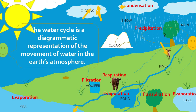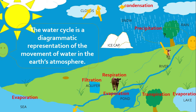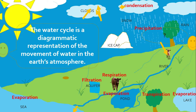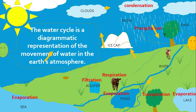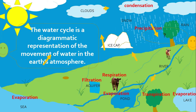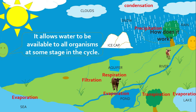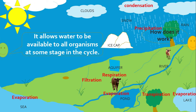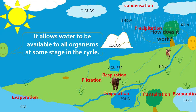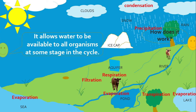The water cycle is a diagrammatic representation of the movement of water in the Earth's atmosphere. It allows water to be available to all organisms at some stage in the cycle.